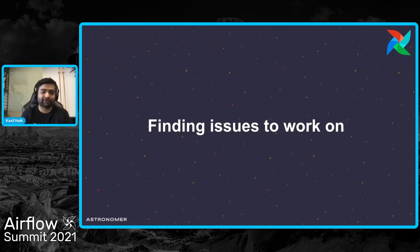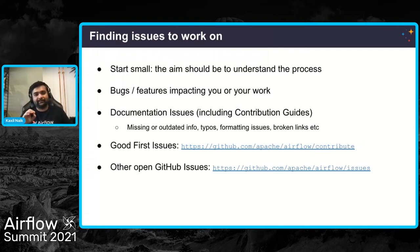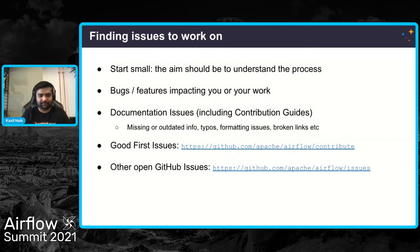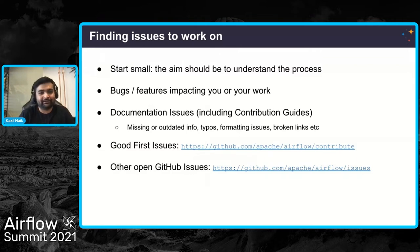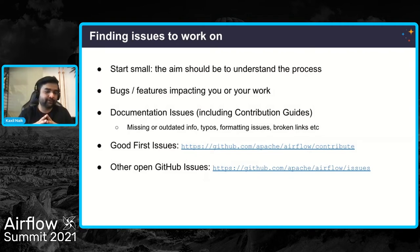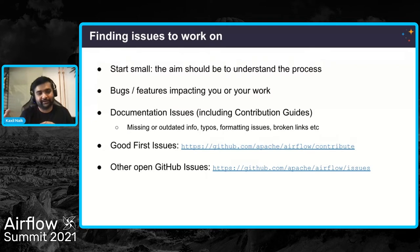The first point is finding issues to work on. Start small — this is the tip I give everyone. Take your first issue as an entry point. You do not need to directly pick a huge issue. If you don't get to the end of it, you'll get demotivated and might never come back. The aim should be to understand the process rather than just getting your PR merged. And if you are already working on Airflow like I was working with Google Cloud Storage, then you know you're facing certain bugs. If you have feature requests, you can work on those.